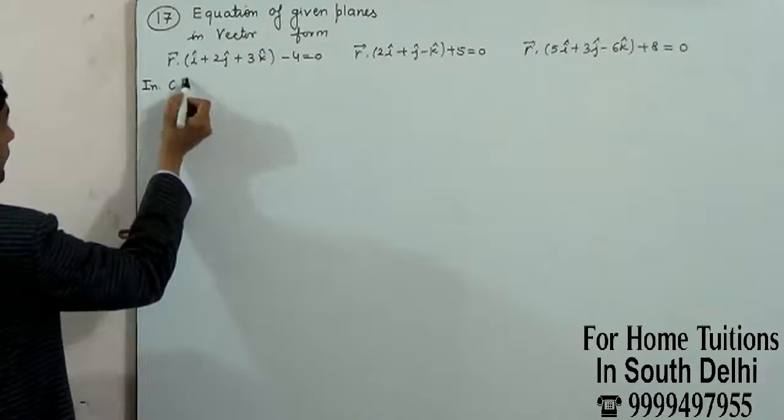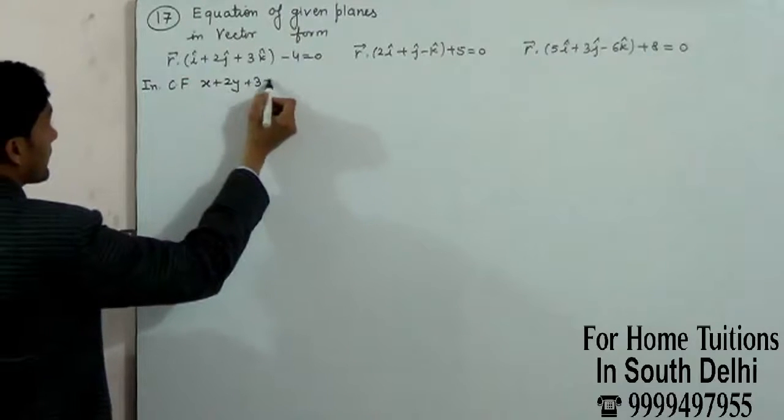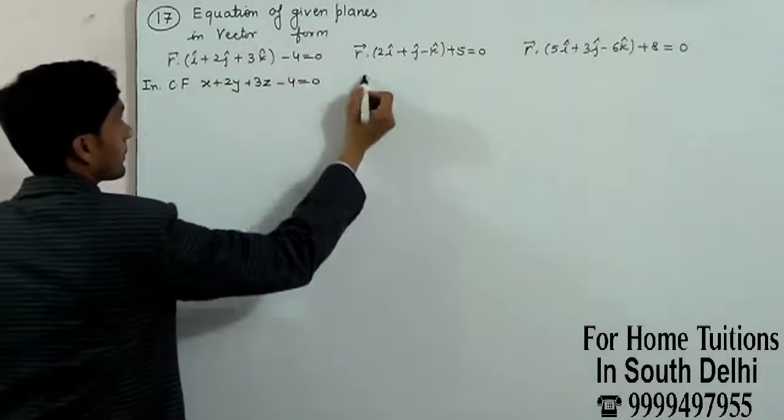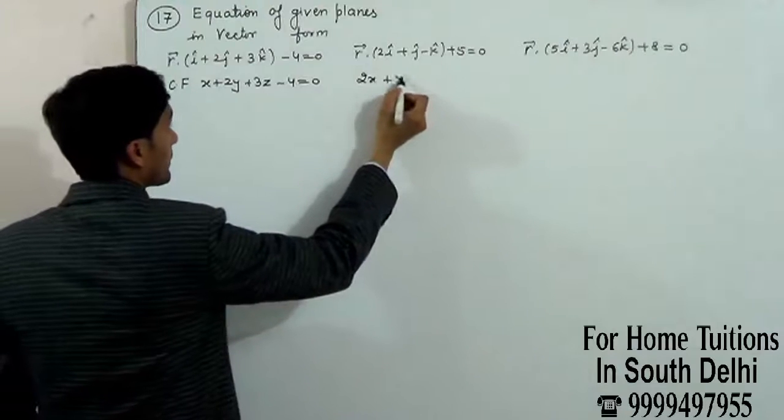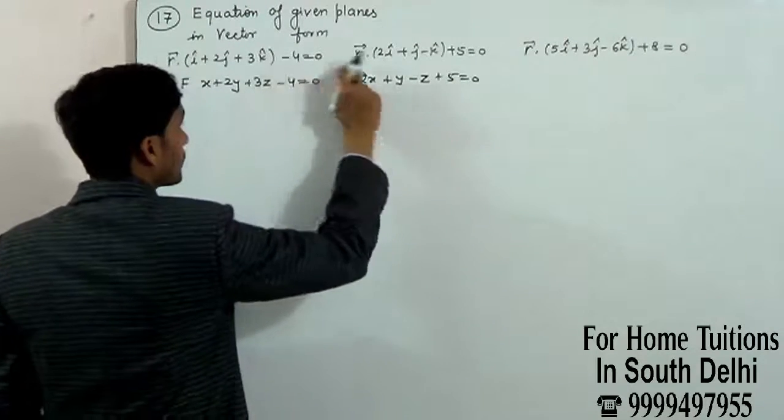X plus 2Y plus 3Z minus 4 equals 0. X plus Y minus Z plus 5 equals 0. The required plane is going to be perpendicular to the third plane and pass through the intersection of the first two planes.